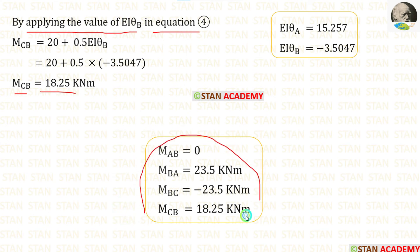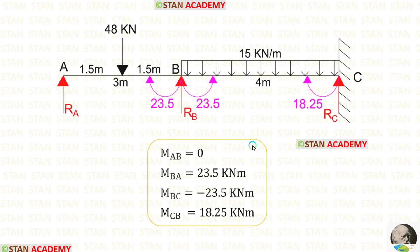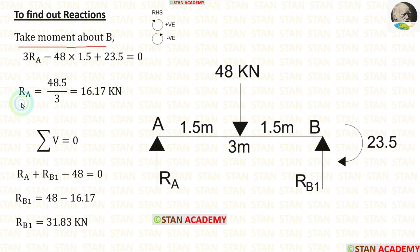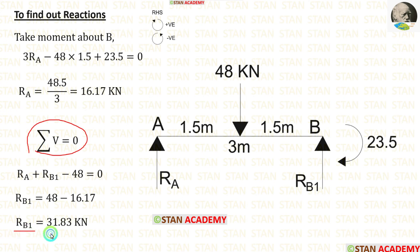We have now calculated all the moments. Now we are going to calculate the vertical reactions. First, let us take span AB. In span AB, there is only one moment — MBA — acting in the clockwise direction. By taking moment about B, we can calculate RA, which is equal to 16.17 kN. By applying the condition that the summation of vertical forces equals 0, we get RB1, which is equal to 31.83 kN.